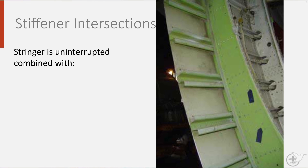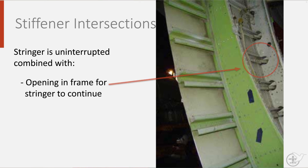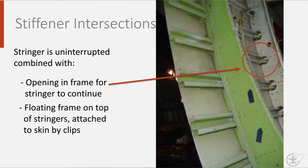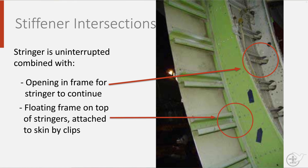Frames and stringers also intersect. Ideally, the stringer is left undisturbed and the frame design is adjusted. This is done by either creating an opening in the frame for the stringer to go through, which implies a local weakening of the frame, or by floating the frame on top of the stringers, attaching it to the skin using clips.